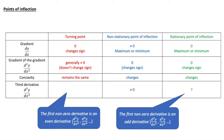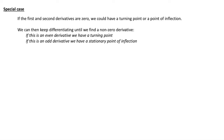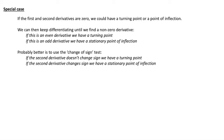The opposite is true for a turning point: the first non-zero derivative is an even derivative. For the problematic case where the first and second derivatives are both zero, we could have a turning point or a point of inflection. We could keep differentiating until we find a non-zero derivative — if it's an even derivative, we have a turning point; if odd, a stationary point of inflection. But it's better to use the change of sign test: if the second derivative doesn't change sign, we have a turning point; if it changes sign, we have a stationary point of inflection.